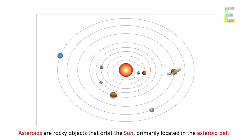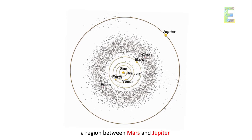Asteroids are rocky objects that orbit the sun, primarily located in the asteroid belt, a region between Mars and Jupiter.